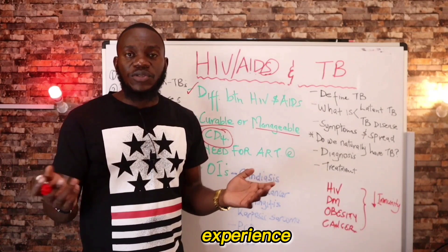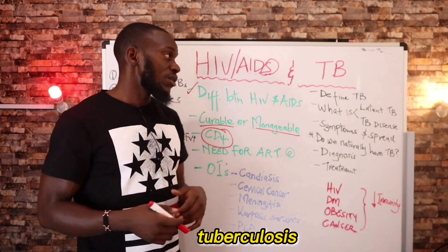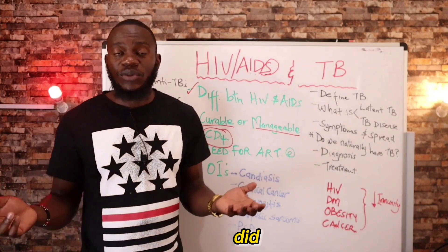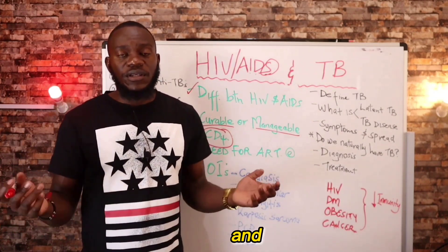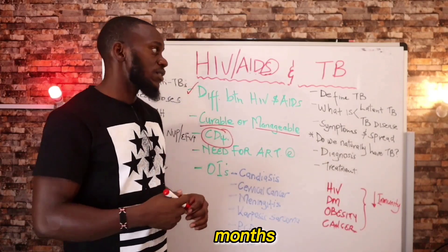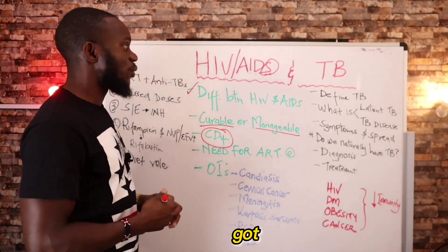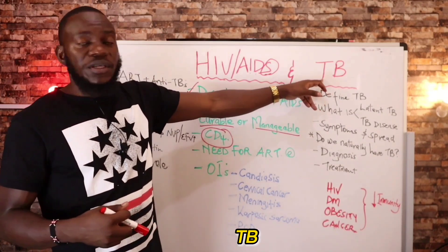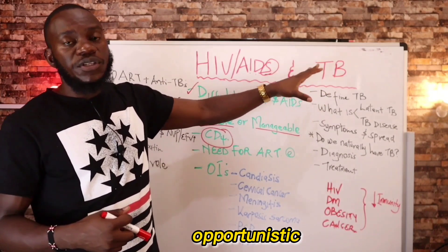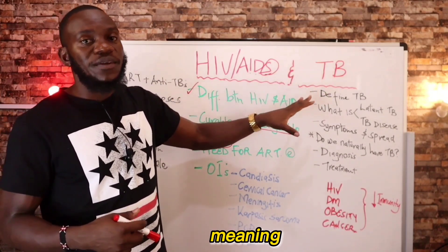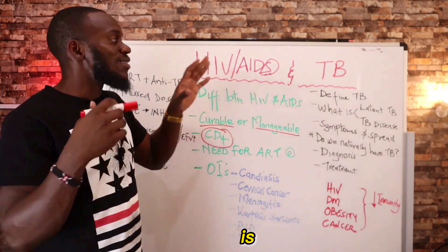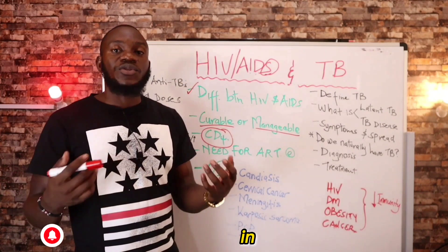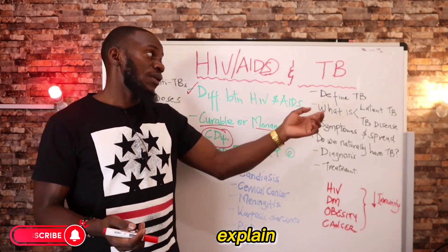Personally, I had an experience with tuberculosis, and I thank God I did not find any stigma. I took drugs for six months and I got well. TB is just an opportunistic infection — meaning it is there and you acquire it. And TB occurs in two forms, which we'll explain.